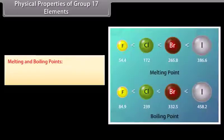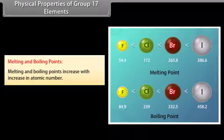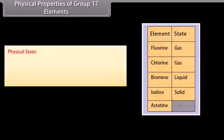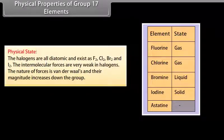Physical properties of Group 17 elements: Melting and boiling points increase with increase in atomic number, indicating that the strength of intermolecular forces of attraction between molecules increases with atomic number. The halogens are all diatomic and exist as F₂, Cl₂, Br₂ and I₂. The intermolecular forces are very weak in halogens; the nature of forces is van der Waals, and their magnitude increases down the group. Thus, F₂ and Cl₂ are gases, bromine is a volatile liquid, and iodine is a volatile solid.